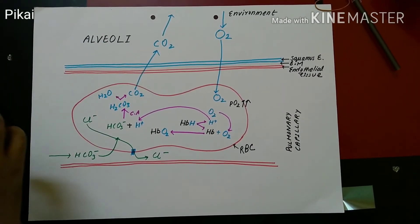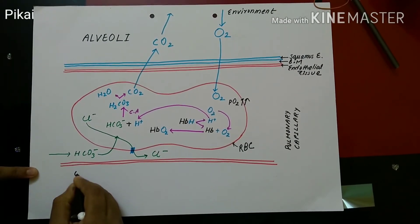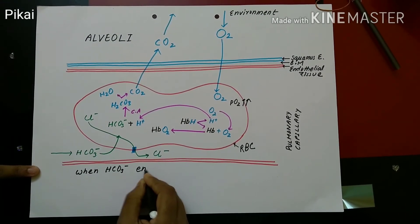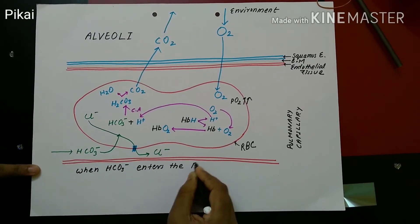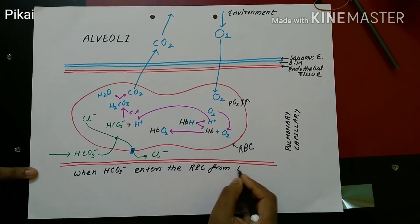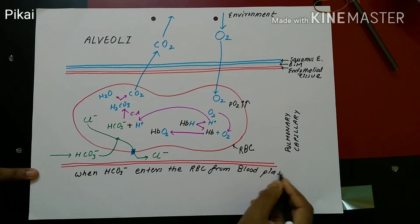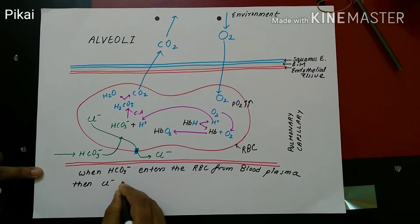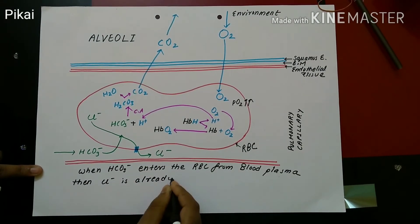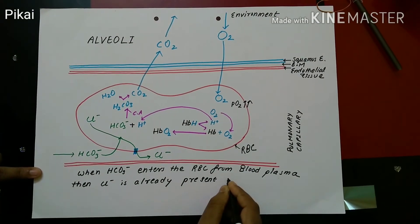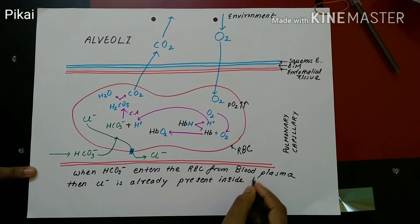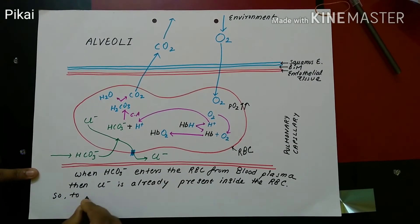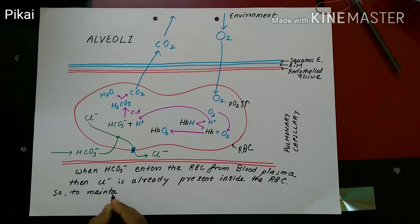There is chloride ion inside RBC as it was there when the chloride shift occurred. And due to the entry of HCO3- ion inside the RBC during reverse chloride shift, there are two negative ions inside the red blood cell which is not a proper balance of charge. So to balance the amount of charge again in a similar way but in reverse direction, the chloride ion leaves the RBC, and this chloride ion leaves the RBC